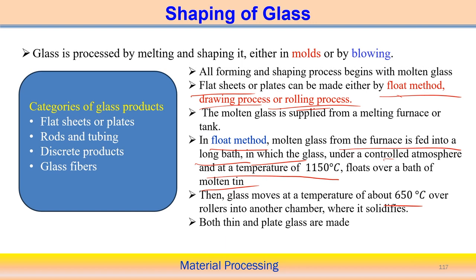This is what we are talking about — the processing of glass into a particular flat or plate shape. This process is called the float method — F-L-O-A-T — because the glass flows through the molten tin bath. This is one process we can use to form flat glass sheets or plates.